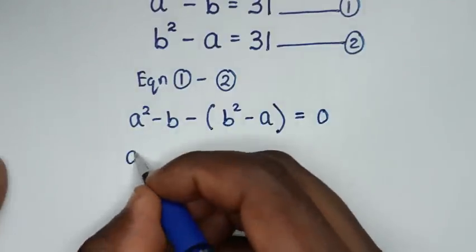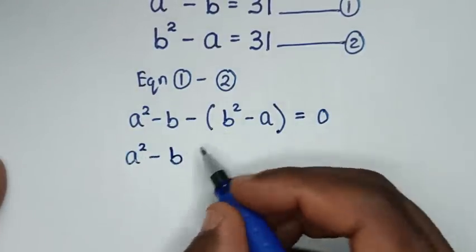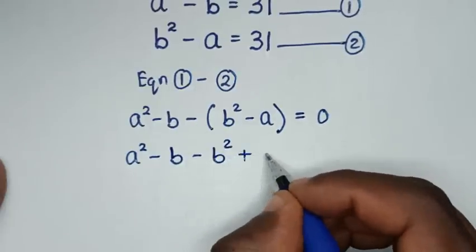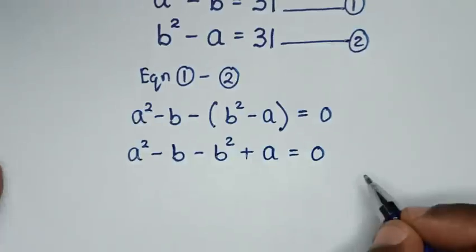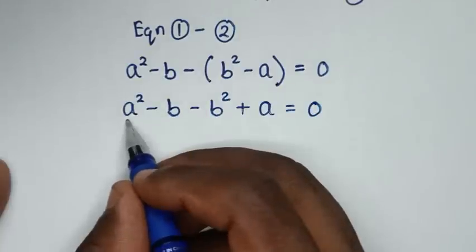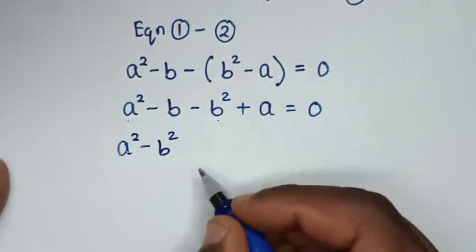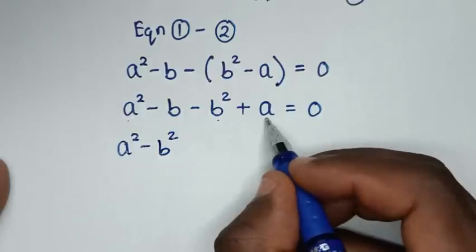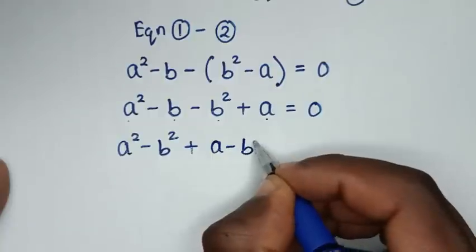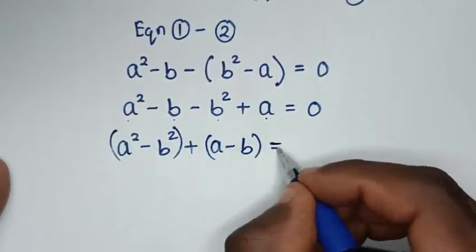Expanding, we get a squared minus b, and opening the bracket with the negative sign gives minus b squared plus a, equal to 0. Grouping the squared terms together: a squared minus b squared, and grouping the remaining terms: plus a minus b, all equal to 0.